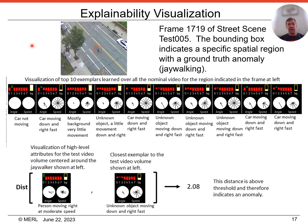Here we visualize an anomaly occurring in a frame of Street Scene. The bounding box indicates a spatial region with the ground truth anomaly. The top 10 exemplars learned for this region are shown first, illustrating that the model has learned that for this region of the scene there are either cars with no movement, cars moving down and right relatively fast, unknown objects moving down and right fast, or background with no movement. The high-level attributes for a test video volume centered around the jaywalker show that this is a person moving right at relatively moderate speed. The closest exemplar to this is an unknown object moving down and right relatively fast. This is a poor match, and thus the anomaly score is high, indicating an anomaly.